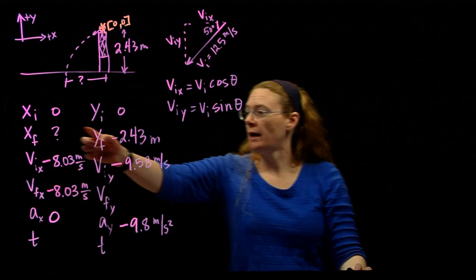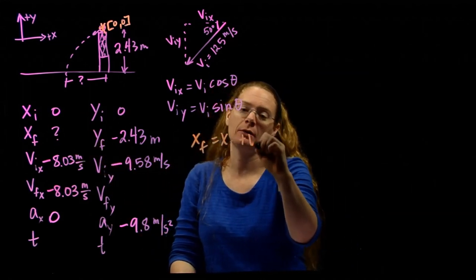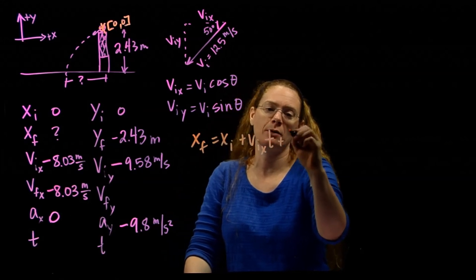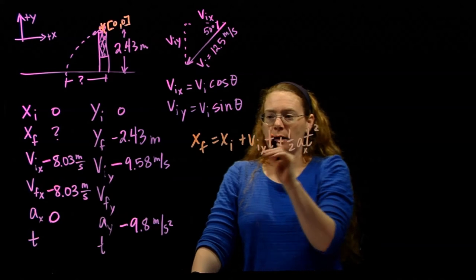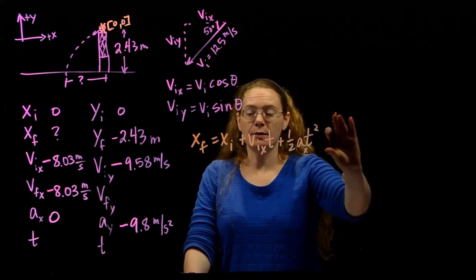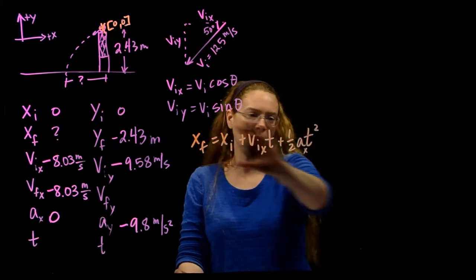So we want to know x final. x final is x initial. Let's see if this will work. v initial t plus 1 half a t squared. And again, you have to keep it all in the same direction. You can't have an x component here and a y component here. It all has to be the x's.